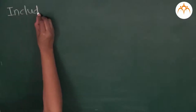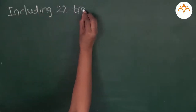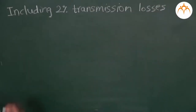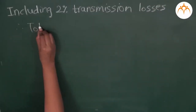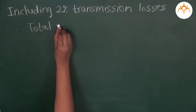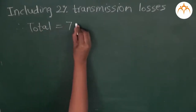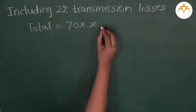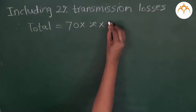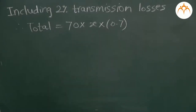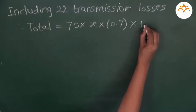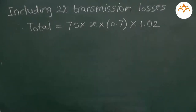Another thing we have been given is that transmission losses account for 2% of the total usage. So here we have our total usage, and above that, 2% occurred due to transmission losses. Including the 2% transmission losses, the total becomes 70 × x × 0.7 × 1.02. This factor accounts for the extra 2% usage due to transmission loss.